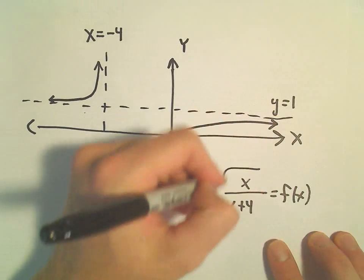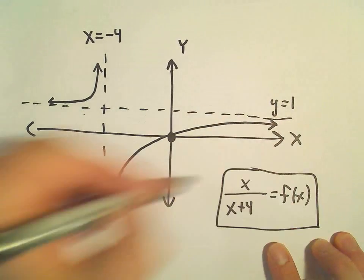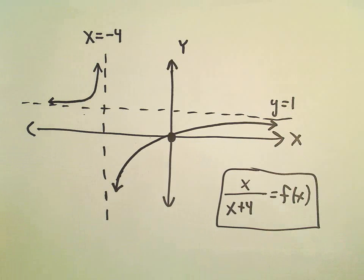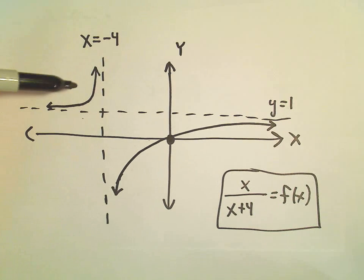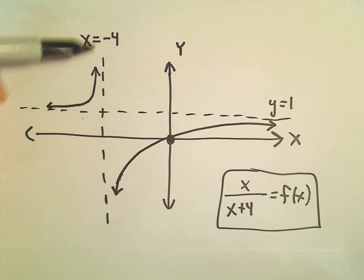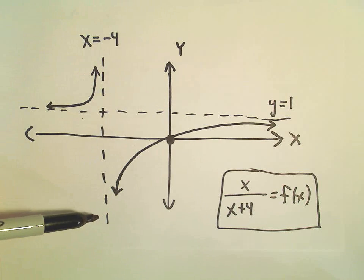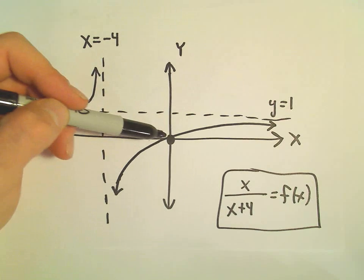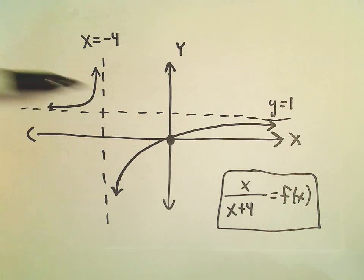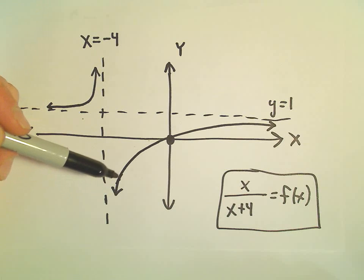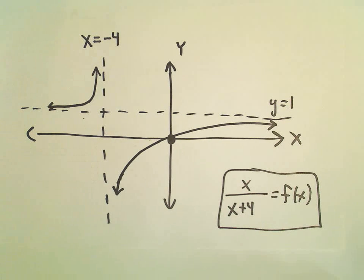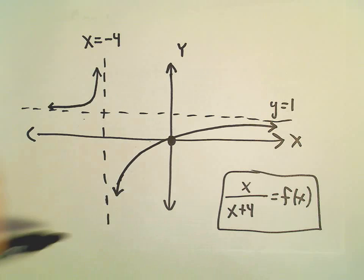So there are a lot of little steps here: thinking about domain, horizontal and vertical asymptotes, x-intercepts, y-intercepts, regions of increase and decrease, and lastly finding the concavity.